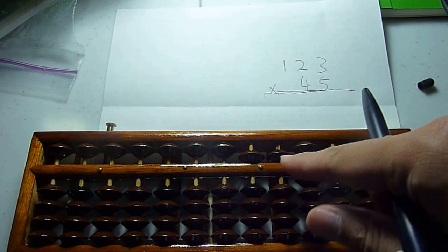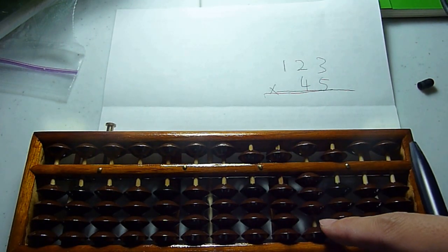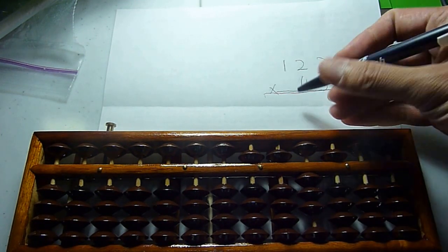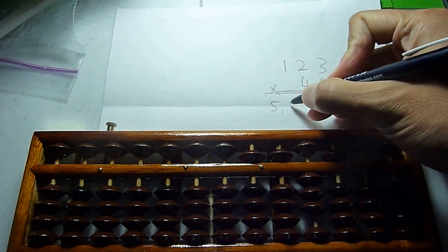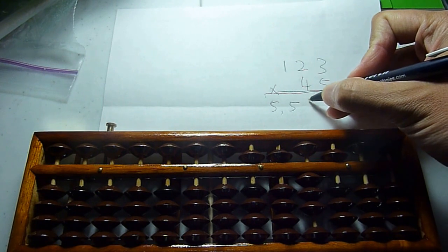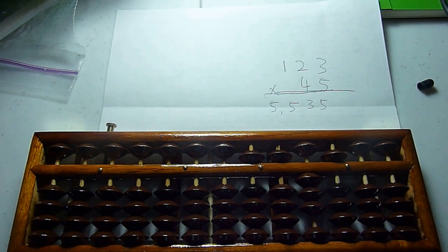And therefore, our answer is 5,535: five thousand, five hundred, and thirty-five. And that's how to do multiplication on the abacus.